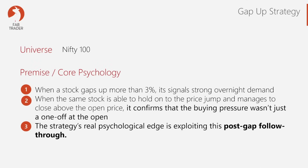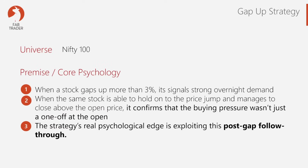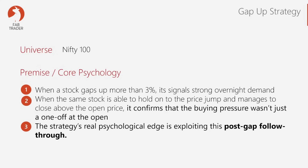Think about it. When a stock gaps up more than 3% at the open, it signals very strong overnight demand — maybe due to positive news, institutional buying, or momentum spillover from global markets. If the stock not only gaps up but also closes higher than its open, it confirms that the buying pressure wasn't just a one-off at the open; it's sustained throughout the day. So the strategy's real psychological edge is exploiting this post-gap follow-through.